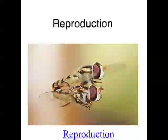So in episodes 1 to 10 of the podcast, we've talked about living things - what they're made of, how they function, how they grow. It's all been very interesting, but what happens if you need more living things? That's where reproduction comes in. And there's two types of reproduction: asexual reproduction, which is when you don't need a partner, and sexual reproduction, which is when you do need a partner.